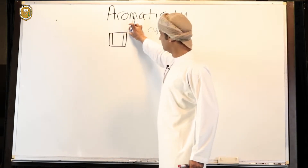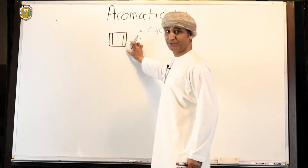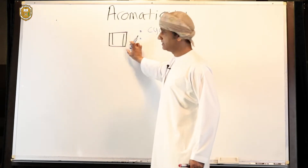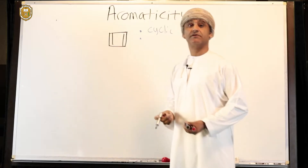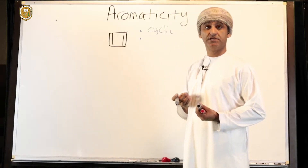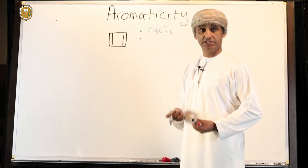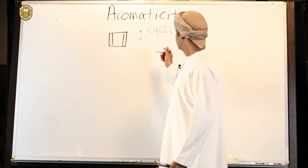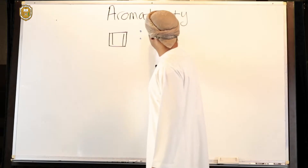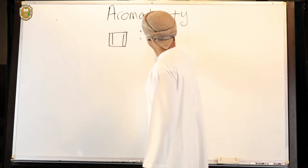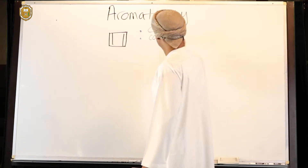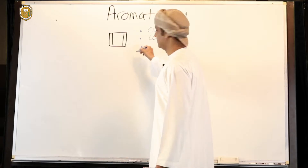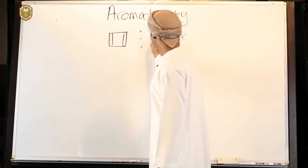This carbon atom is sp2 hybridized, this one is sp2, that one is sp2, and that one is sp2 as well. Therefore, there is a P orbital on each of these carbon atoms, so it is conjugated. Is it flat? Well, it should be flat — it's a very simple molecule.